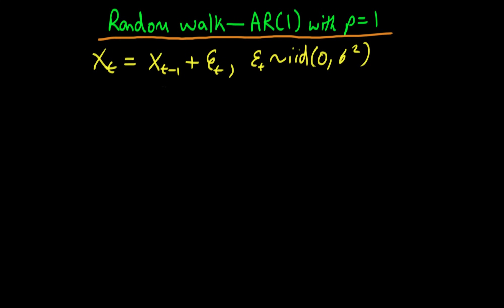We already know from our discussion of AR(1) processes that we require that rho has to be less than 1 in order for the process to be stationary. So when we're setting rho equal to 1, we know that we're going to be dealing with a non-stationary time series, but we need to think about why. The best thing to do is to back-substitute in for Xt.